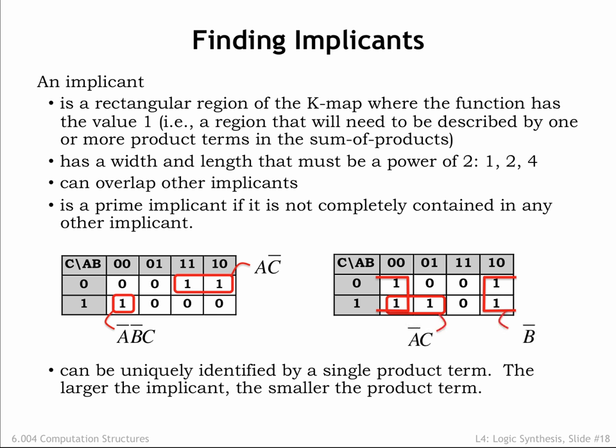Here are the two product terms for the two prime implicants in the right-hand K-map. Notice that the larger the prime implicant, the smaller the product term.